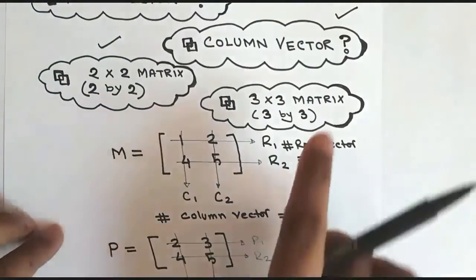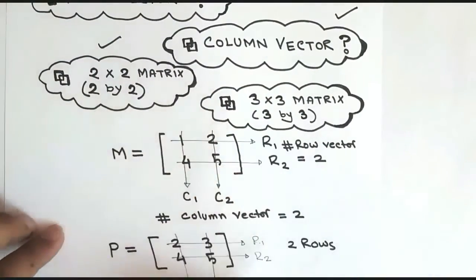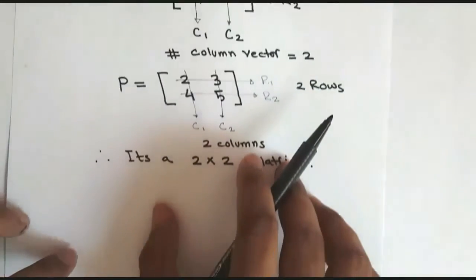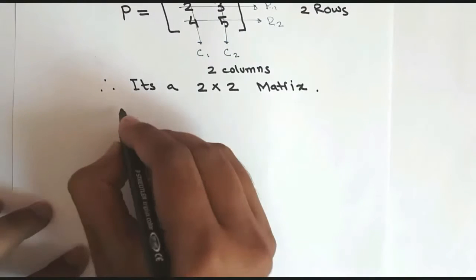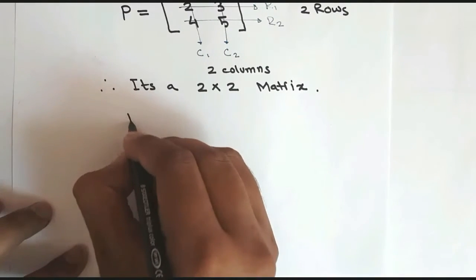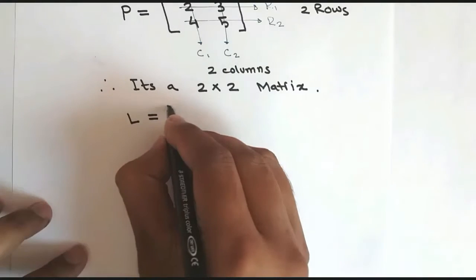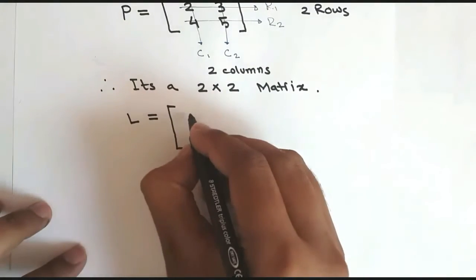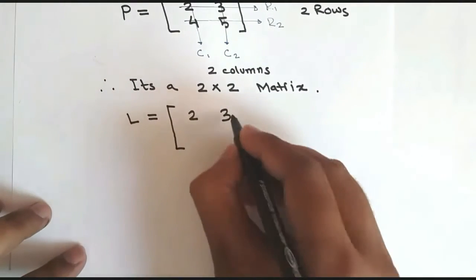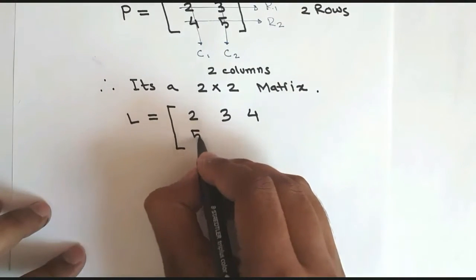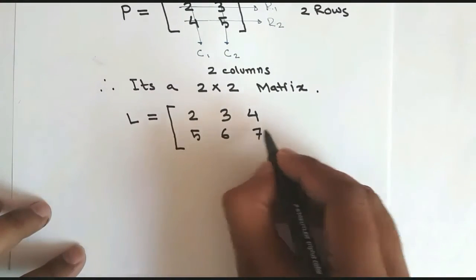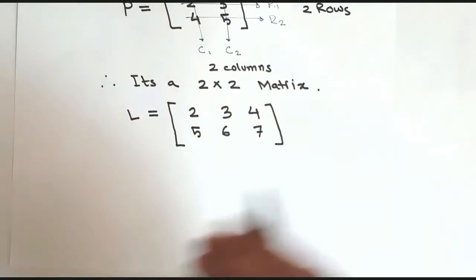So we are done with the two by two matrix and moving on to our three by three matrix. It's also like two by two matrix but it's the same, let me show you.